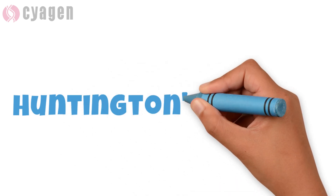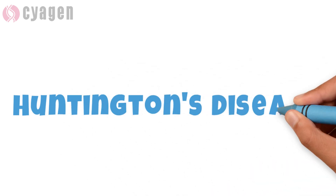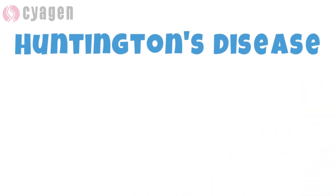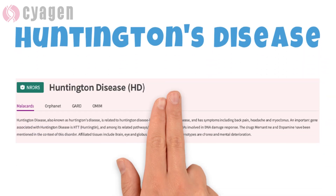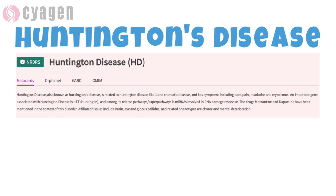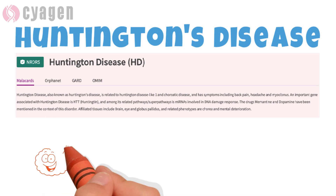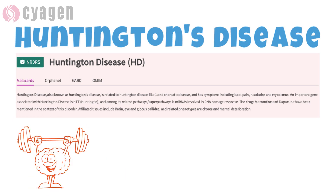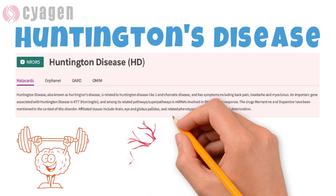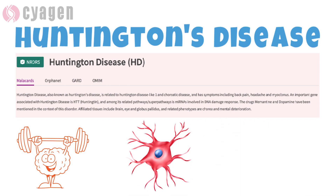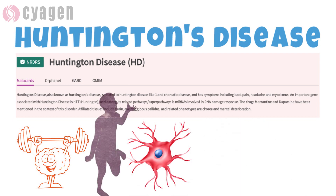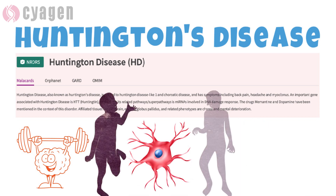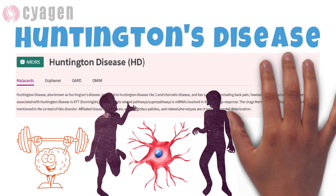Huntington's disease, also known as Huntington's chorea, is an autosomal dominant degenerative disease of the basal ganglia and cerebral cortex, clinically characterized by insidious onset of symptoms including chorea, cognitive disorder, as well as mental and behavior disorder.